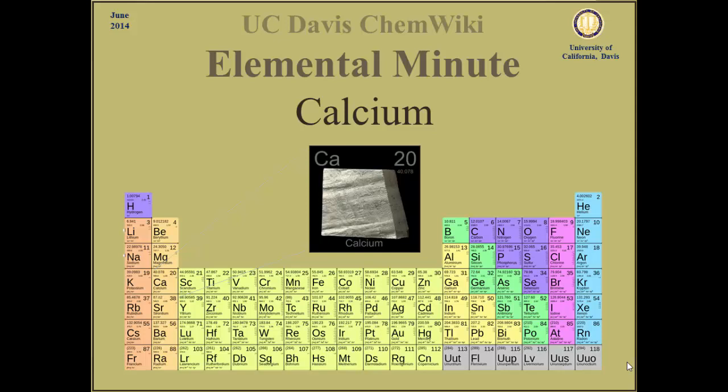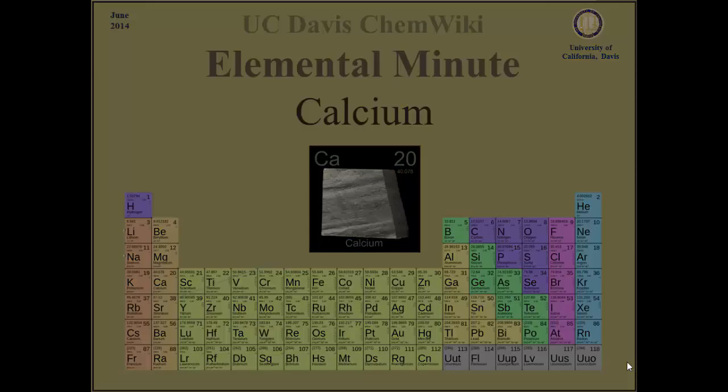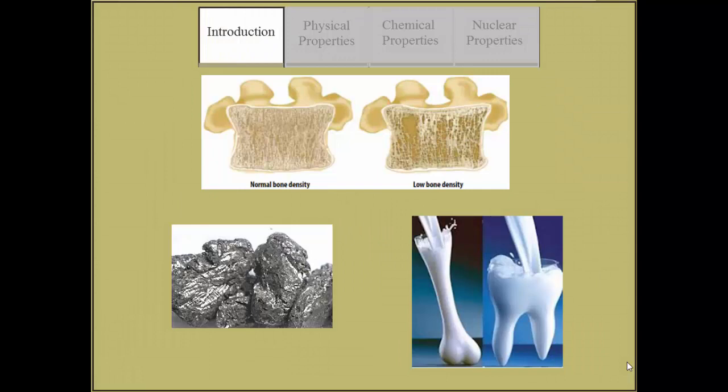Calcium is a common, soft, alkaline earth metal that is the fifth most abundant element in the earth's crust and is essential for living organisms. Calcium is a major material used in the mineralization of bone, teeth, and shells.